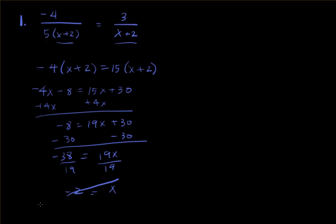Let's do it the other method. Negative 4 over 5 times x plus 2 equals 3 over x plus 2. I'm going to look at the LCM of both denominators. So I'm going to multiply both sides by 5 times x plus 2.